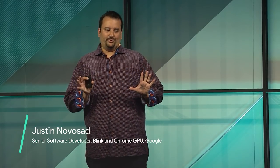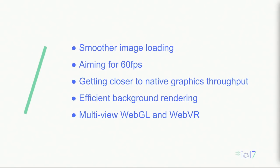For those of you who haven't read the abstract, this talk is going to be mostly about Canvas and a few other things. We're going to look at ways to get smoother image loading, because image loading is often a source of jank. We'll look at problems we face when aiming for 60 frames per second, moving web apps closer to native performance, memory-efficient and CPU-efficient background rendering, and streamlining use cases with WebGL — in particular multi-view rendering and WebVR.